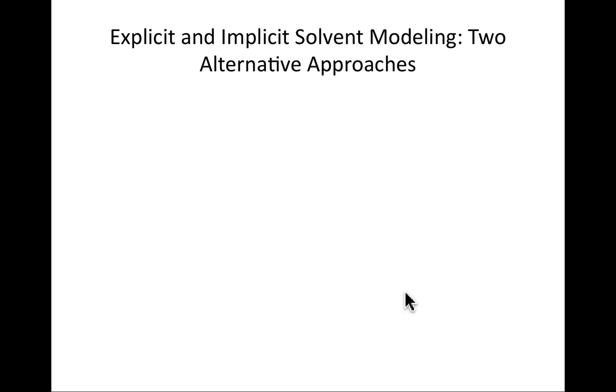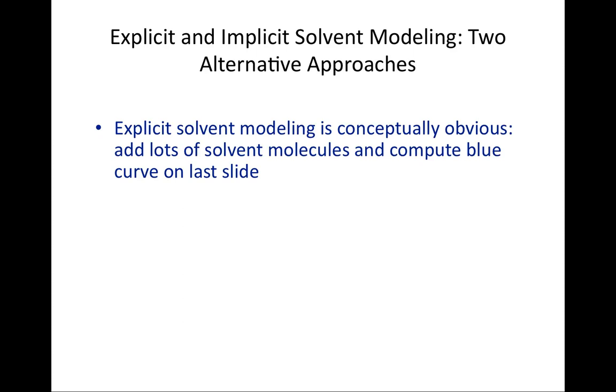So the question arises, how might we go about modeling the interaction of a system of interest with the surrounding medium? And there are really two alternatives, so-called explicit and implicit solvent modeling. Explicit solvent modeling is really the blindingly obvious one, in a sense. You take your system of interest, and you expand it by including a whole bunch of solvent molecules. And in that case, you could go to the last slide and compute the blue curve.